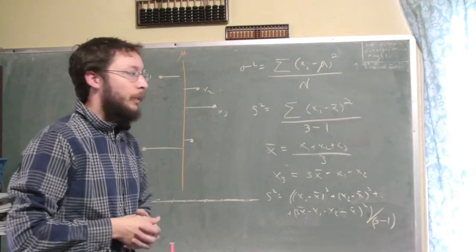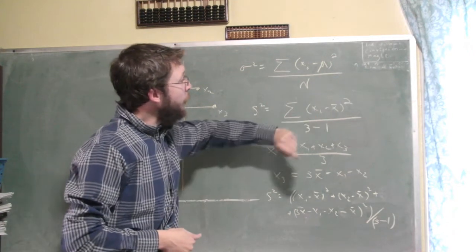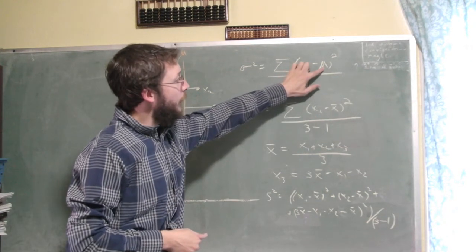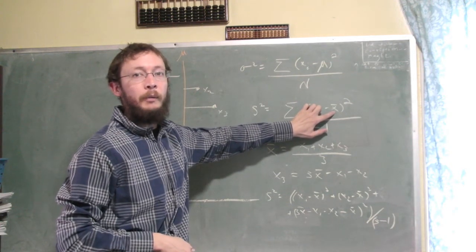So degrees of freedom are basically how many free random variables do you have in your calculation. And any time you estimate a population parameter, here we estimated the mean using the sample mean.